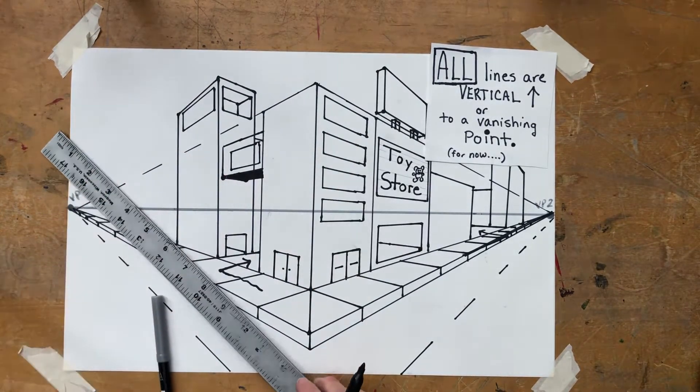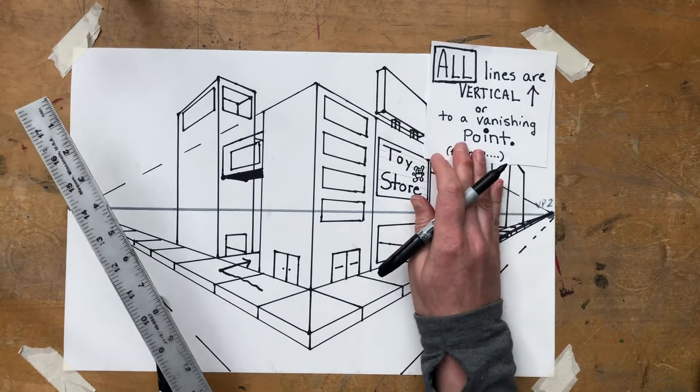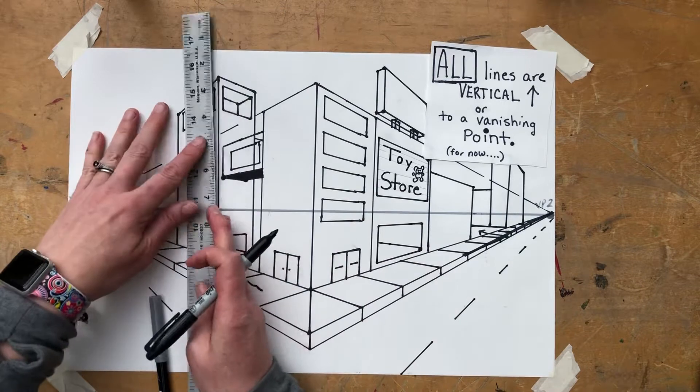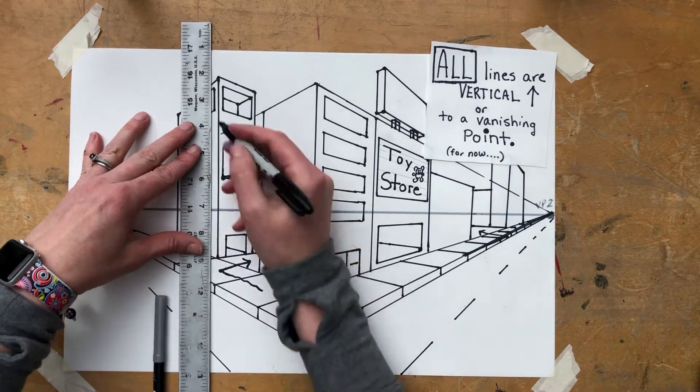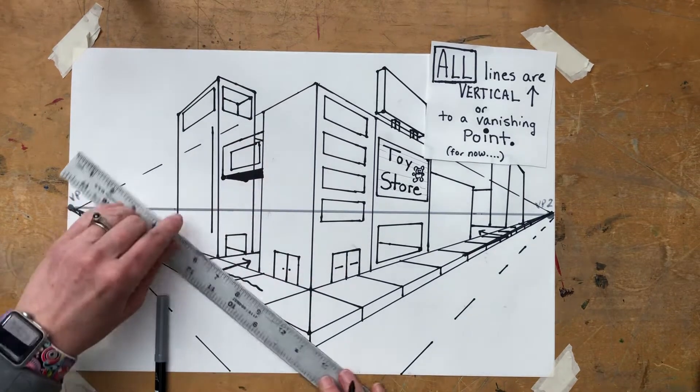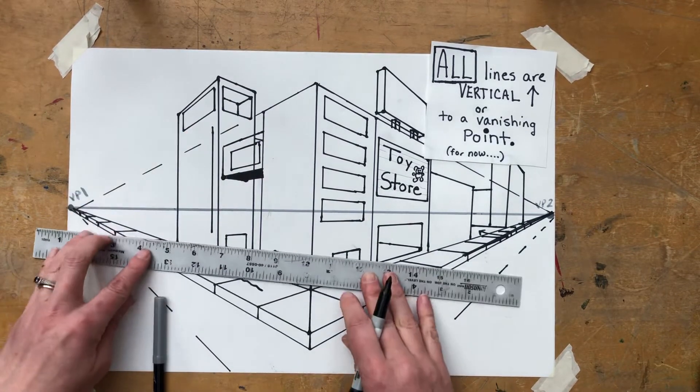The same is true if you have a building that you want a sign sticking off of it. So let's say instead of a window on this side, I want a sign that sticks off. A pretty tall one right now. And now I am going to go over the horizon line. Top and bottom of this, again, if it was going to be a big window, I'd connect to VP1.